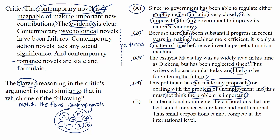Choice E: In international commerce, the corporations best suited for success are large and multinational. Thus, small corporations cannot compete at the international level. This has a strong conclusion, but the evidence doesn't match. We don't see two instances of small corporations failing and then a conclusion that they can never compete. The flaw here is assuming that because large corporations are best suited, small corporations can't compete at all — and that's different from what we see in the passage.